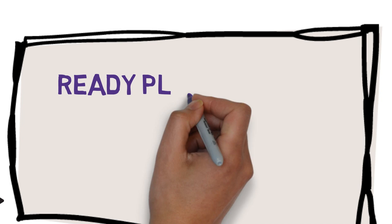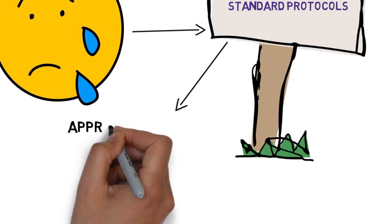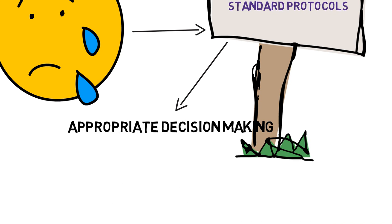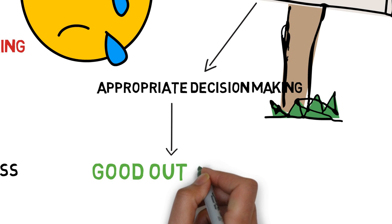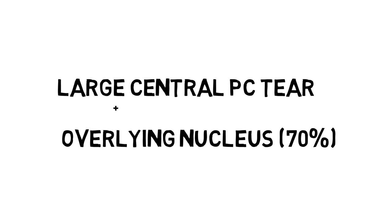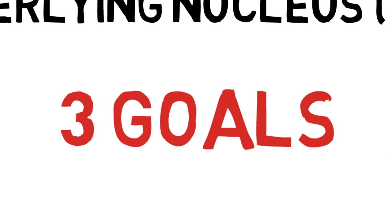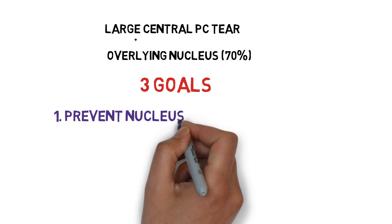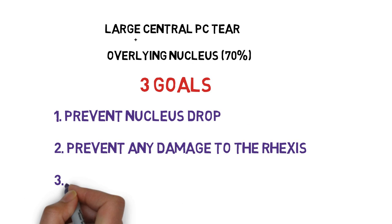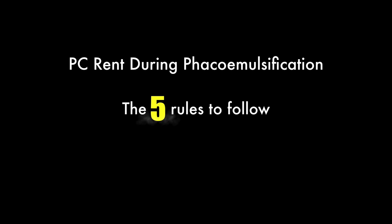In this particular case, we could have had a nucleus drop. In such situations, we must always have a game plan ready with standardized protocols to face these unexpected challenges. Being prepared makes us more confident and we are not relying purely on instincts. In this case we have a large central PC tear with an overlying nucleus, and there are three goals: prevent nucleus drop, protect the rhexis to have support to place the lens, and prevent corneal endothelial damage.